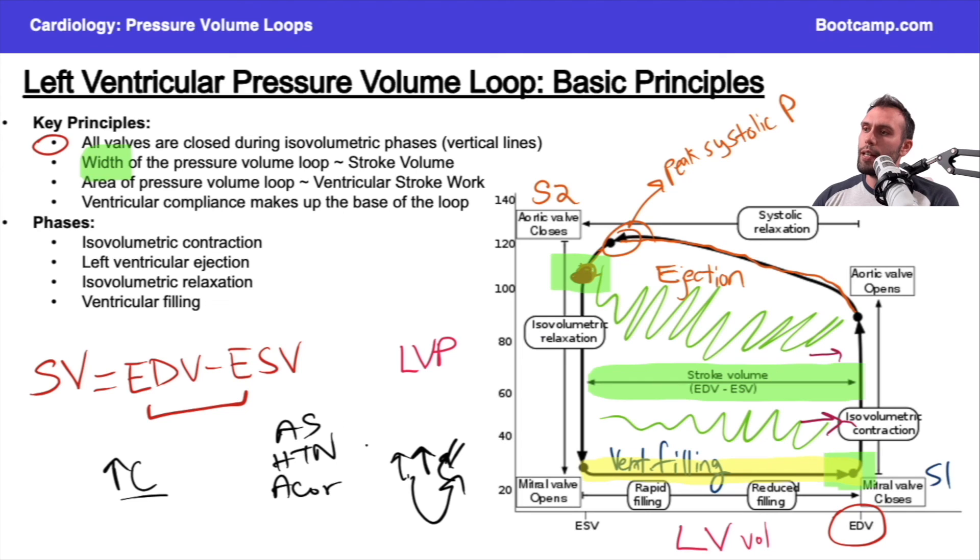In those situations, what ends up happening is you get ventricular remodeling, and you end up developing ventricular hypertrophy, but that comes at a cost. If you develop ventricular hypertrophy, your compliance actually starts to go down.